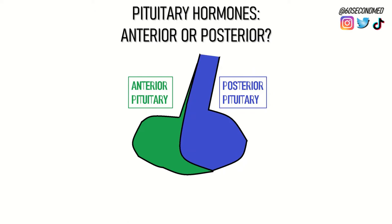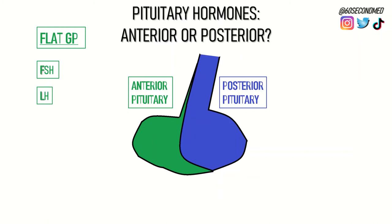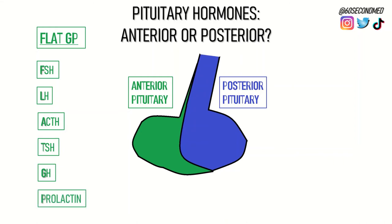For the anterior pituitary, we can think about the mnemonic FLAT GP to help us remember. F stands for FSH (follicle stimulating hormone), L for LH (luteinizing hormone), A for ACTH (adrenocorticotrophic hormone), T for TSH (thyroid stimulating hormone), G stands for growth hormone, and P for prolactin.